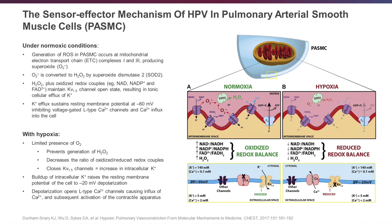Complexes 1 and 3 produce superoxide — that's O2 minus — which is then converted by superoxide dismutase into hydrogen peroxide, or H2O2. Hydrogen peroxide is then capable of donating a hydrogen to our oxidized redox couples: NAD, NADP, and FAD. By doing so, it helps maintain the calcium channels in a closed state by keeping the potassium channels in an open state, allowing potassium to efflux freely out of the cell. This keeps the resting membrane potential of the cell at minus 60 millivolts.